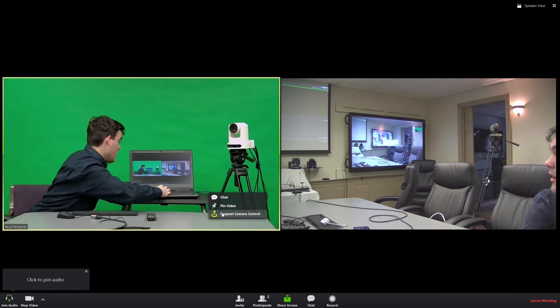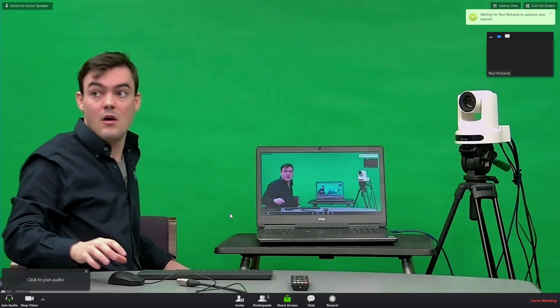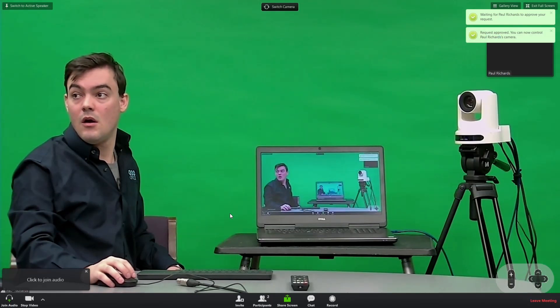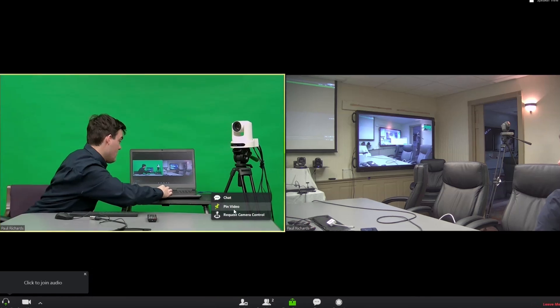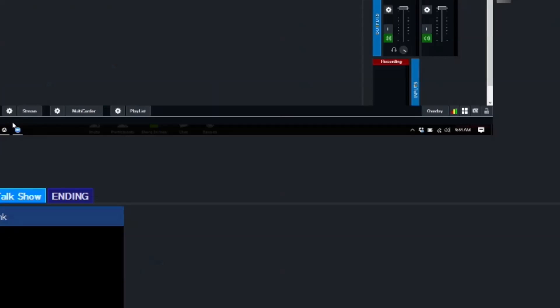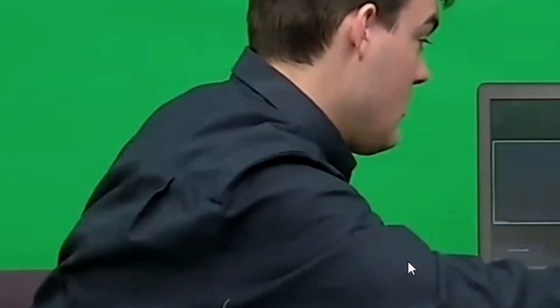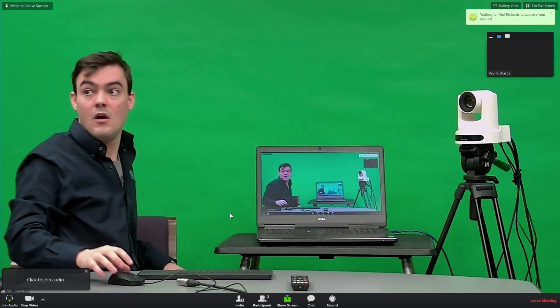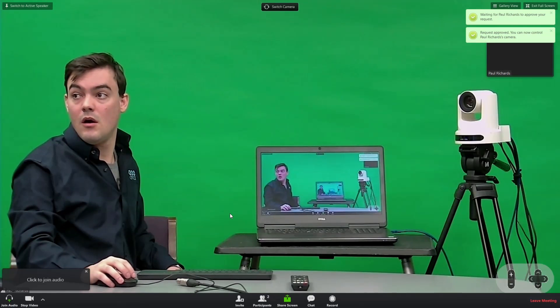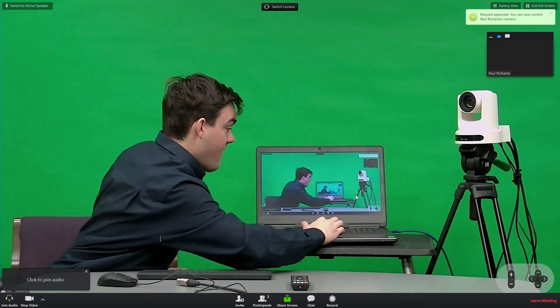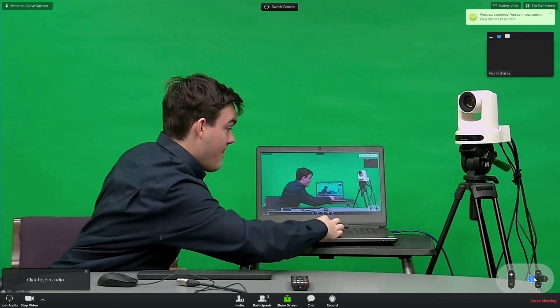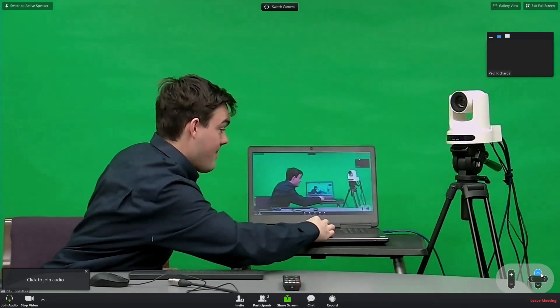When you have a PTZOptics camera connected to your computer in Zoom video conferencing, you now have the ability to right-click and click request camera control. See that? Let me zoom in on this. See that there? That's the request camera control button right there. And when you click that button, you gain pan, tilt, and zoom controls directly in Zoom.